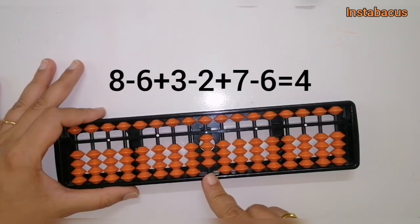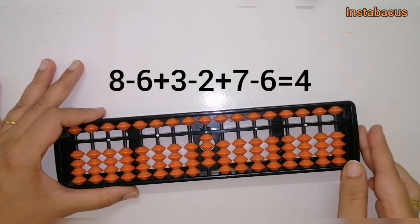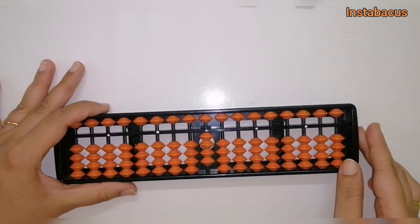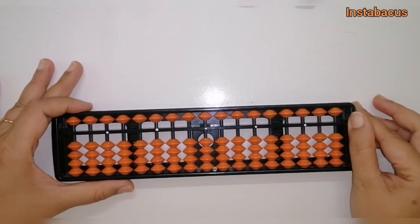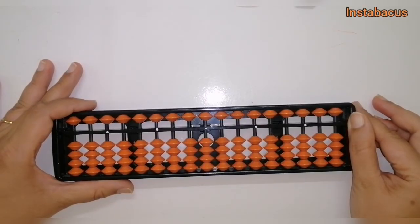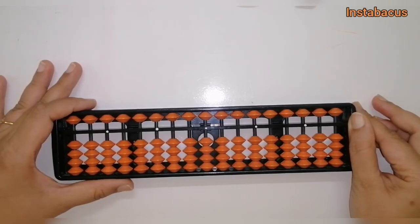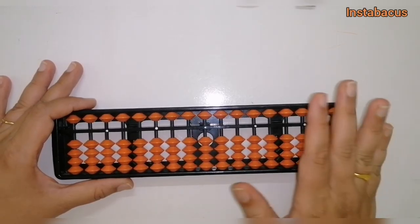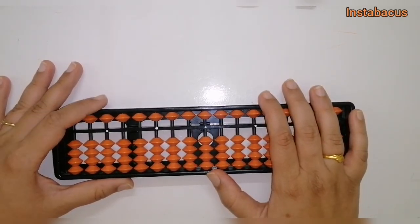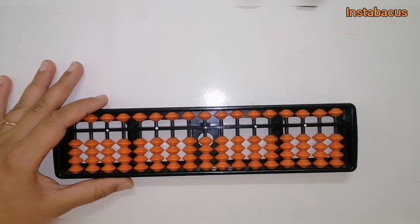So 8 minus 6 plus 3 minus 2 plus 7 minus 6 equals 4 — that's correct. If you have any doubts, feel free to comment and let me know. I'm more than happy to make more detailed videos for you. Thank you so much for watching — keep learning and keep mastering the technique of abacus with Instabacus!